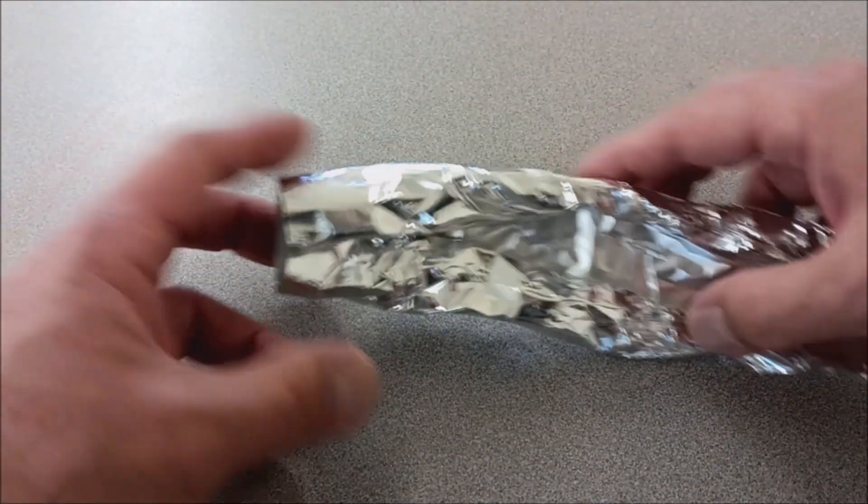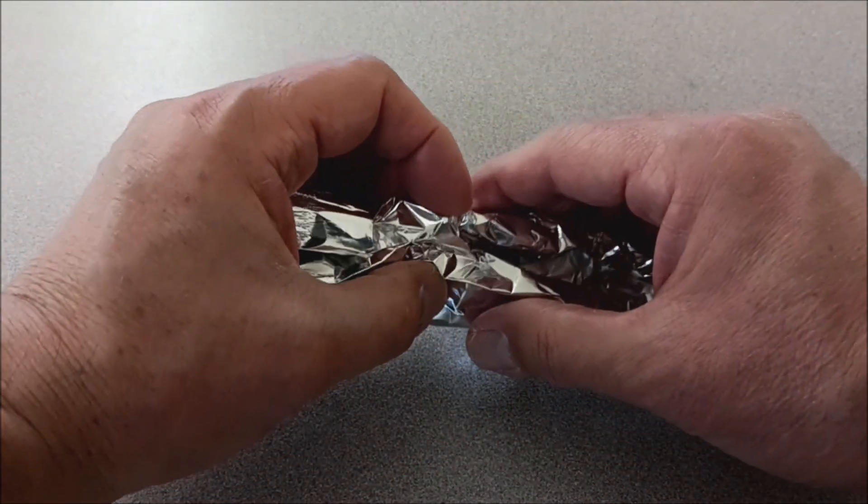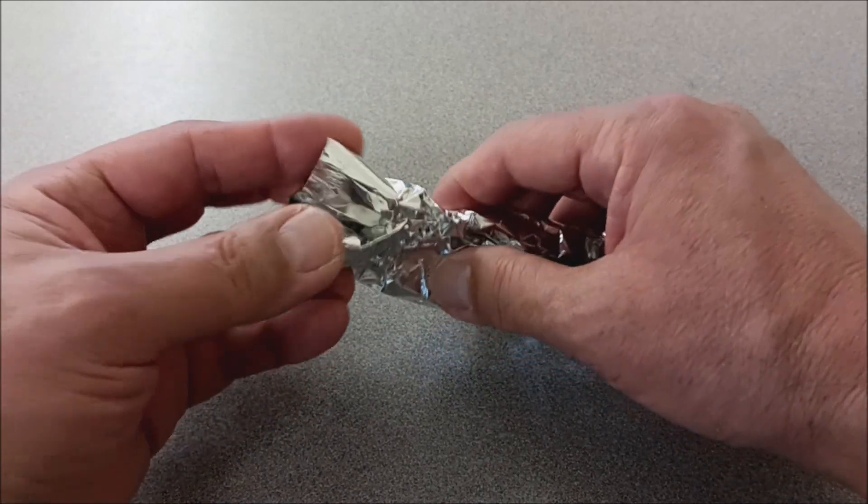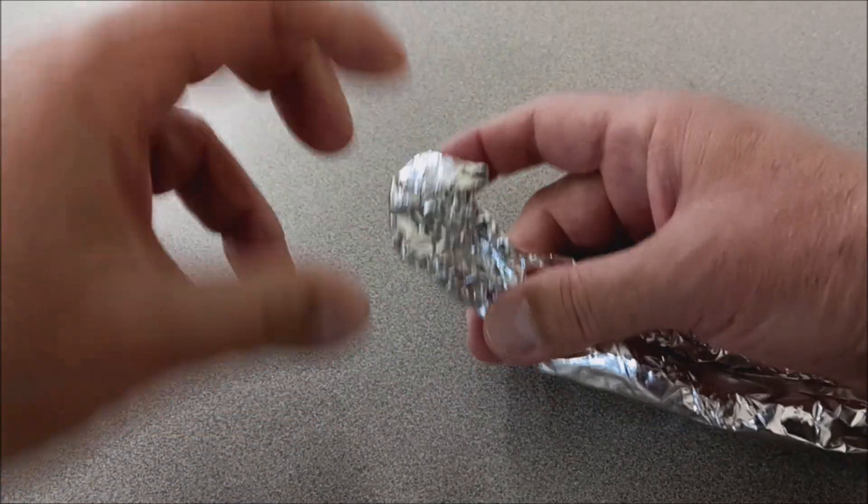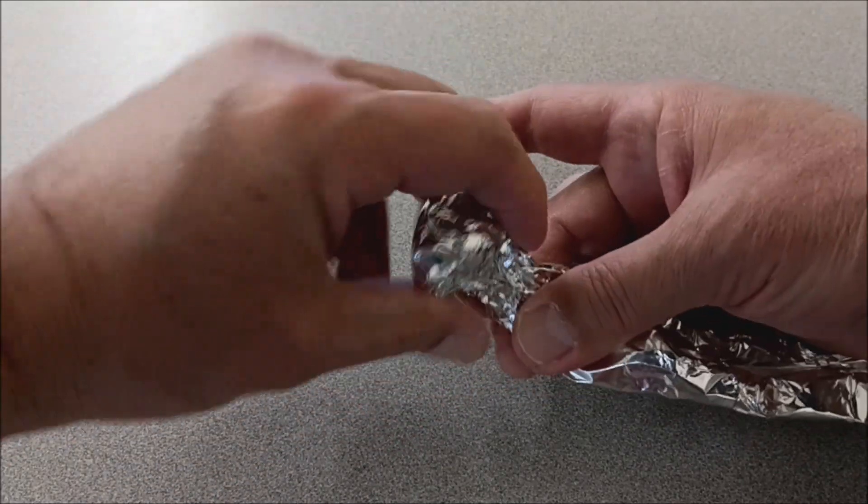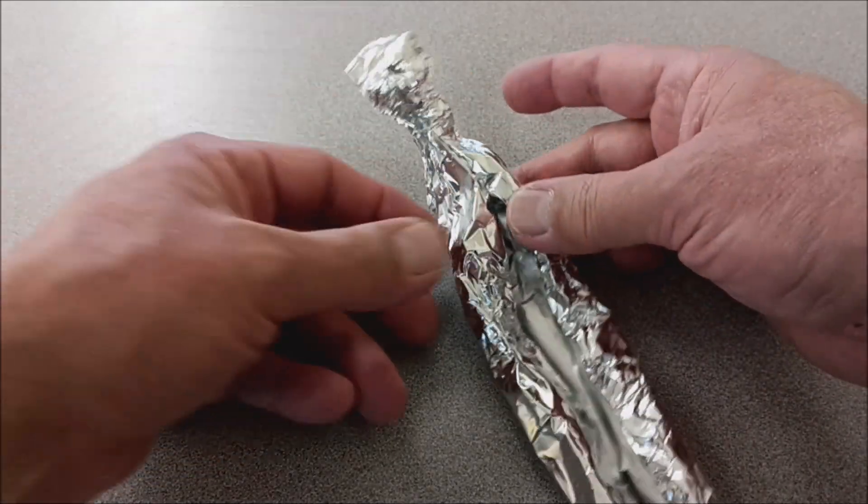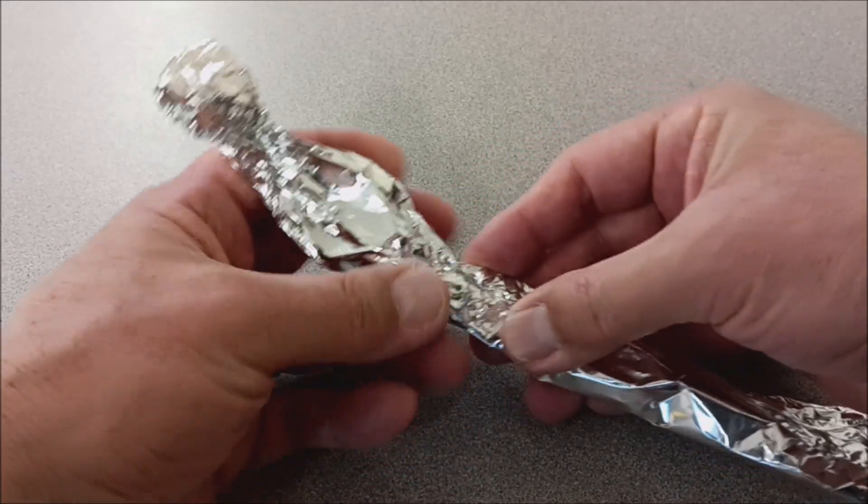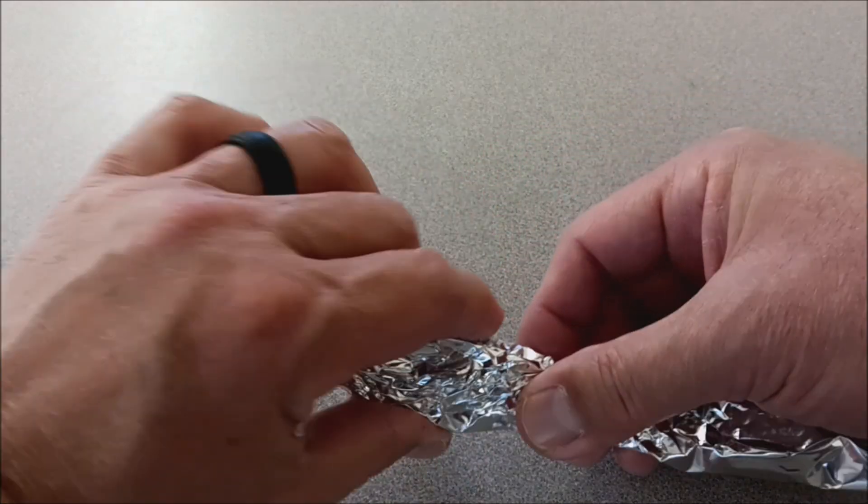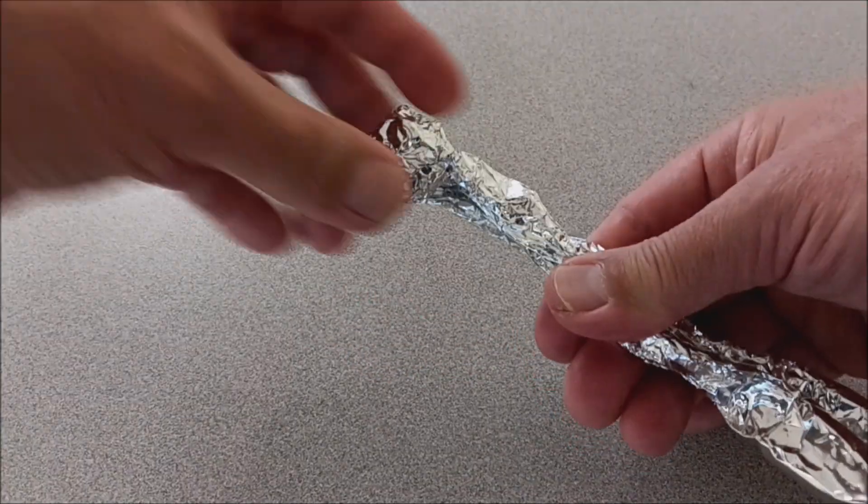And so now to make the head, I tell them just take their hand and squeeze right here, and all the foil up here is going to make the head. And I tell them try not to make it all perfect. They don't have to stress out about it being perfect. And so there's the head, and then I tell them just kind of push all of this foil in together so they have the body.